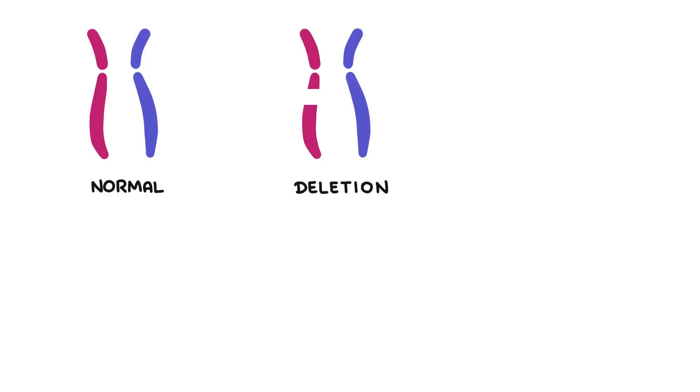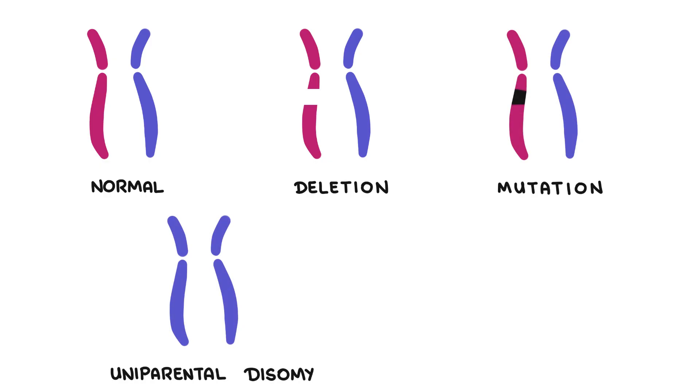Other causes include a mutation in this area, uniparental disomy, where you have two copies of chromosome 15 from the father, so nothing from the mom, and imprinting defect, which occurs when the maternal chromosome 15 is blank.